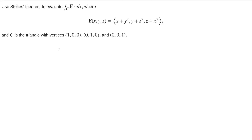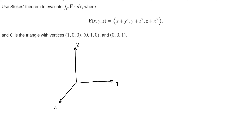In this example, we are asked to compute the path integral of F dot dr around a simple closed path. The path is given by a triangle whose vertices all lie on the coordinate axes in three-dimensional space. This is a triangle that lives in a plane that is not one of the coordinate planes. Let's start by sketching this triangle and giving it an orientation.